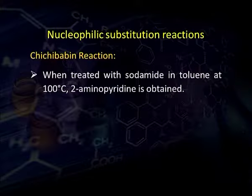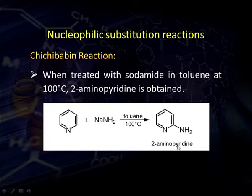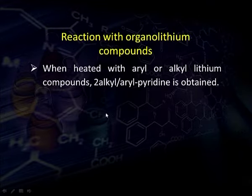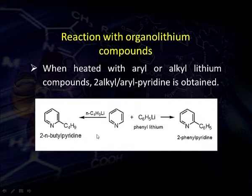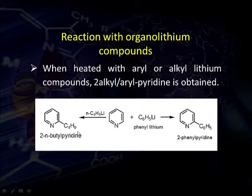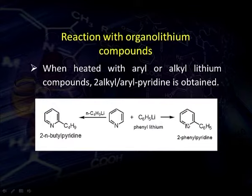In the Chichibabin reaction, pyridine is treated with sodium amide in toluene as solvent at 100°C. The amino group gets attached at position 2 and we get 2-aminopyridine. When treated with alkyl-lithium compounds, the alkyl group gets attached at position 2 in pyridine. For example, when treated with n-butyl lithium we get 2-n-butylpyridine, and when treated with phenyl lithium we get 2-phenylpyridine. If position 2 is already substituted, the reaction takes place at position 6; if both are substituted, the reaction takes place at position 4.